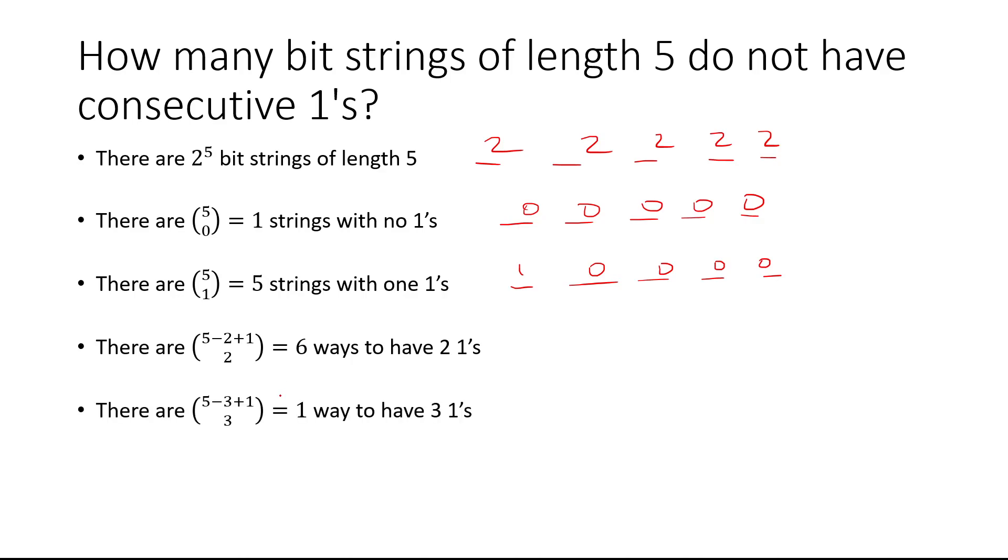And then if you want to choose 3 ones, there's going to be 5 minus 3 plus 1 choose 3. In other words, it's going to be only one way to have 3 ones.